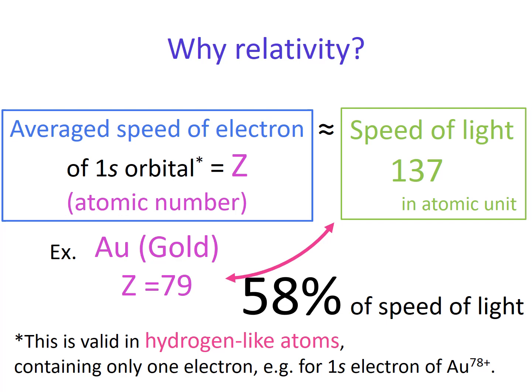This is an interesting example, and I hope you can share this story with your friends. The average speed of one s electron is represented as atomic number Z in the atomic unit. In contrast, the speed of light is represented as 137 in the same atomic unit.